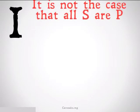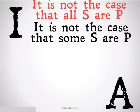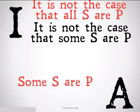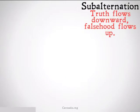Let's take a look. We cannot conclude: 'It is not the case that all S are P, therefore it is not the case that some S are P.' Nor can we conclude: 'Some S are P, therefore all S are P.' It should be pretty clear why these are fallacious.